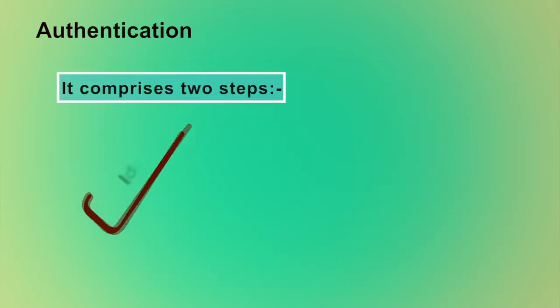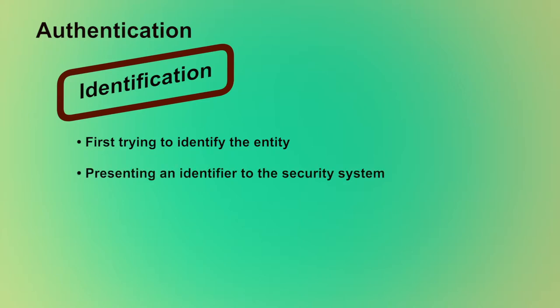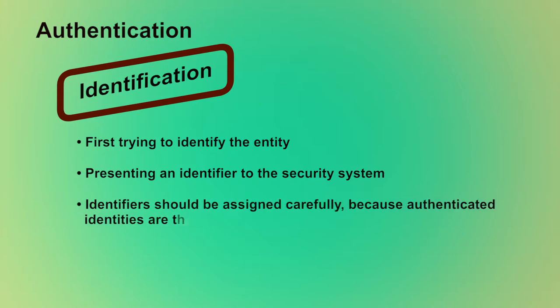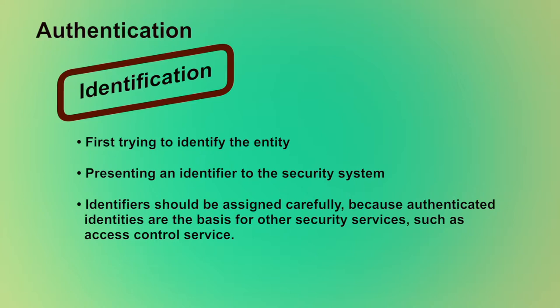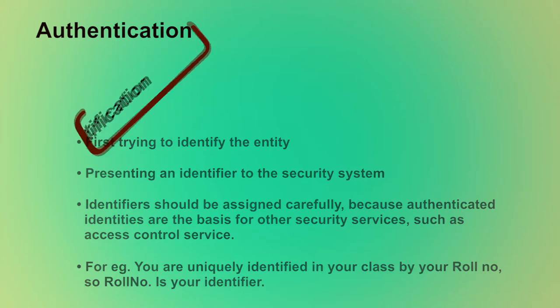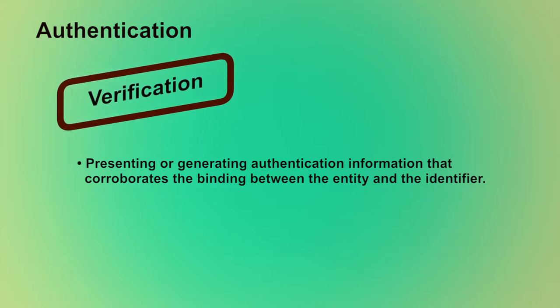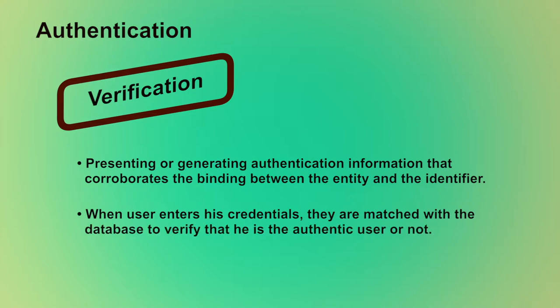An authentication process mainly comprises two steps: the identification step and the verification step. In the identification step, we first try to identify the entity by presenting an identifier to the security system. An identifier should be assigned carefully because authenticated identities are the basis for other security services such as access control. For example, you are uniquely identified in your class by your roll number — so roll number is your identifier. The verification step involves presenting authentication information that corroborates the binding between the entity and the identifier. When a user enters credentials, they are matched with the database to verify that he is the authentic user.